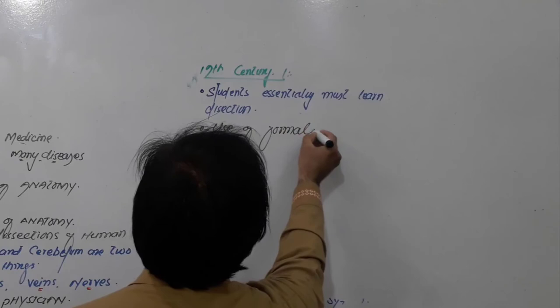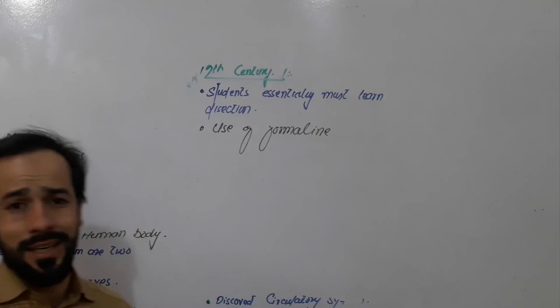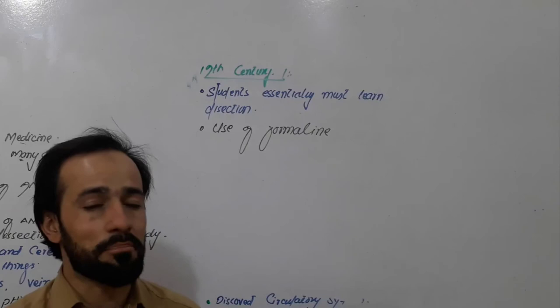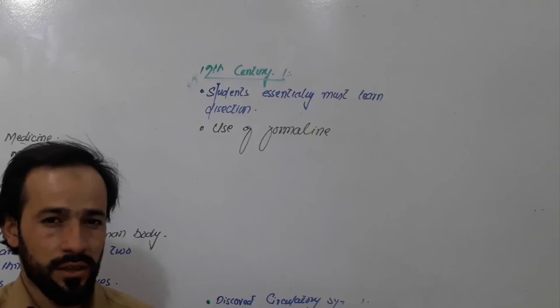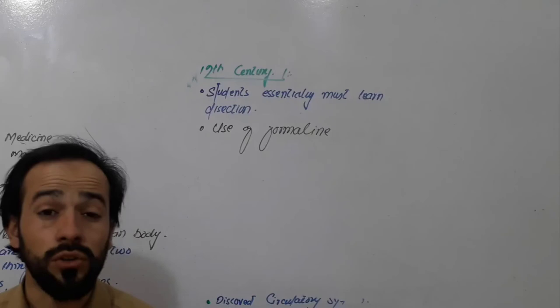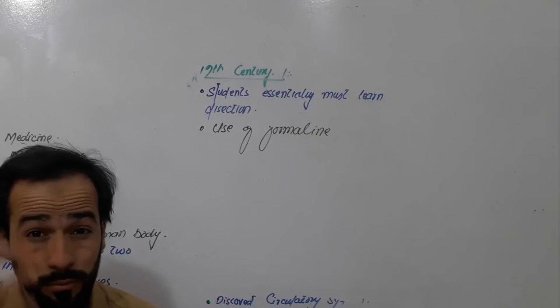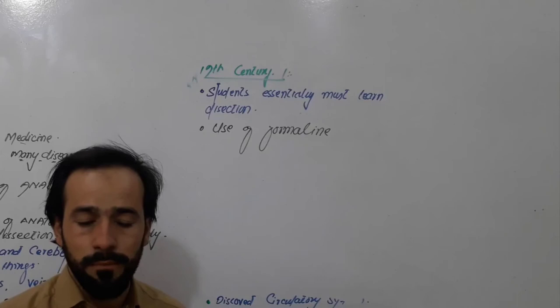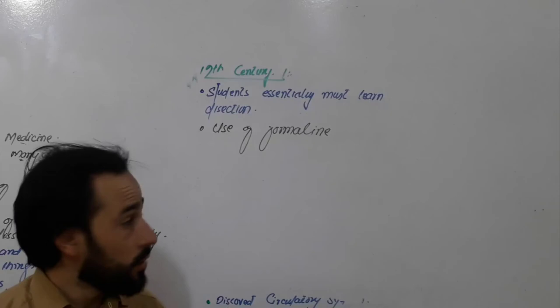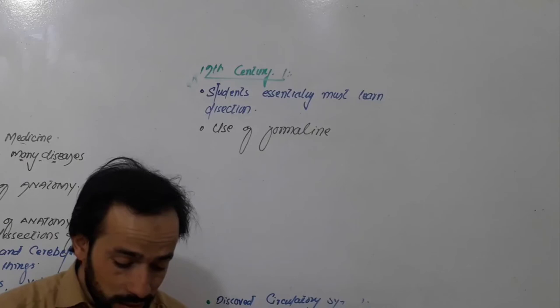Another important development in the 19th century was the use of formalin. Formalin, or formaldehyde, is a chemical substance used for the preservation of tissues of the human body. In medical college laboratories, preserved bodies are available for students to study. Formalin keeps tissues, cells, and organs preserved so students can study the different parts of the human body.